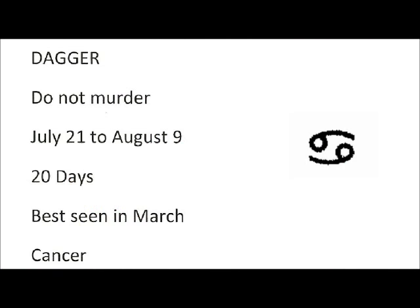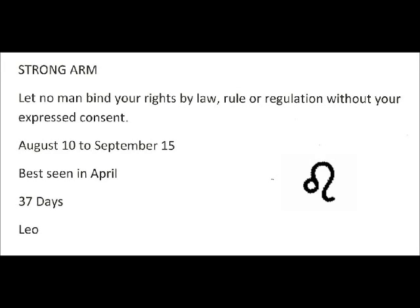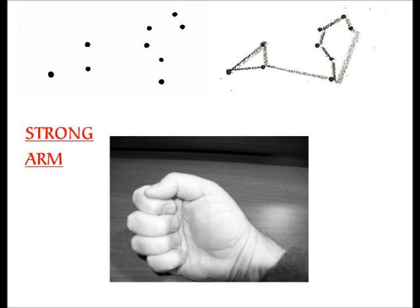Do not murder. July 21st to August 9th. Duration is 20 days. Best seen in March. Formerly known as Cancer. Strong arm. Let no man infringe your rights by law, rule, or regulation without your expressed consent. August 10th to September 15th. Duration is 37 days. Best seen in April. Formerly known as Leo.